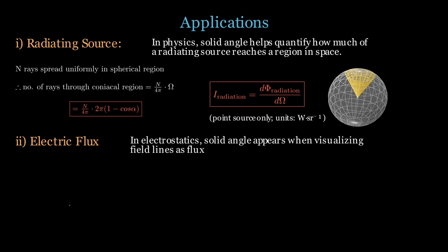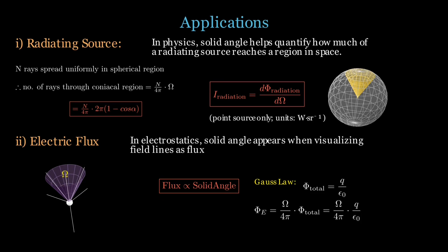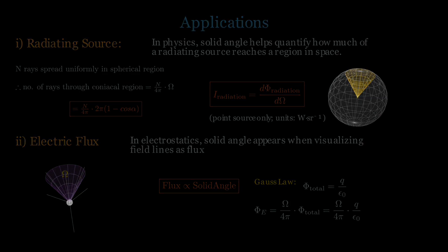Here, we show a point charge emitting field lines radially outwards and if we isolate a conical region, the number of field lines or flux passing through it is again proportional to the solid angle. And, later on, while studying electrostatics, we'll see that from Gauss's law, we know that the total flux from a point charge is q by epsilon naught. Thus, the flux through the cone would be omega over 4 pi times the total flux and this localized version of Gauss's law directly connects angular coverage to the fraction of the total electric field.